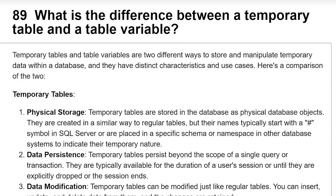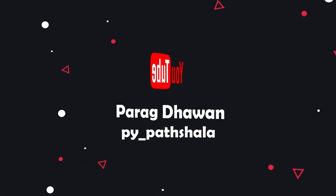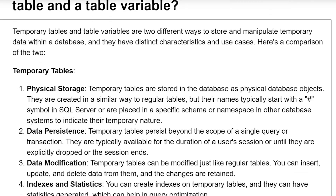What is the difference between a temporary table and a table variable? Temporary tables and table variables are two different ways to store and manipulate temporary data within a database. They have distinct characteristics and use cases. Here is a comparison of the two, starting with temporary tables.